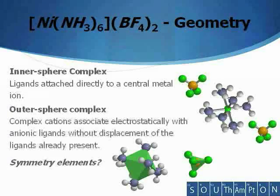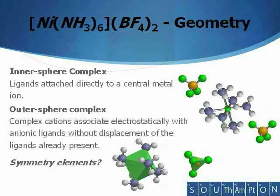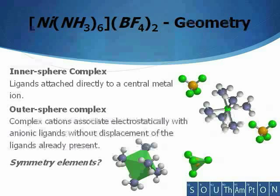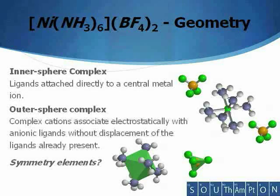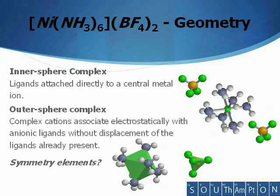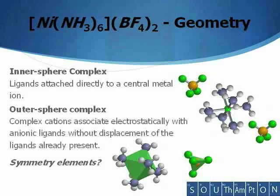Note that the product generated in this practical has both an inner sphere and an outer sphere complex. The inner sphere complex consists of the nickel cation containing six NH₃ ligands coordinated to the central metal in an octahedral arrangement. The BF₄ anion has the shape of a regular tetrahedron. For your write-up, you will need to consider the symmetry elements of these particular geometries.